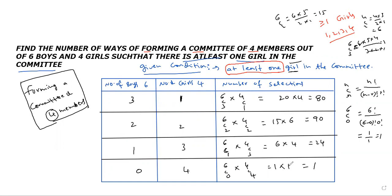Now add all cases to get the total number of selections: 80 + 90 = 170, plus 24 = 194, plus 1 = 195. Total number of selections is 195. This is the required number of ways of forming the committee. Now let's move to the next question.